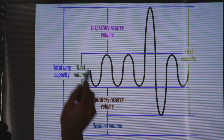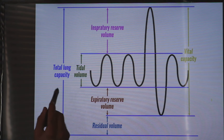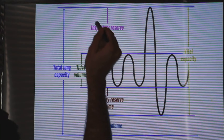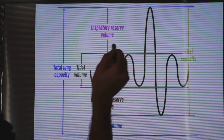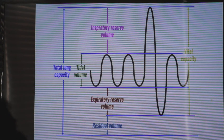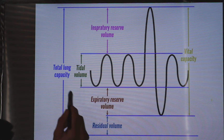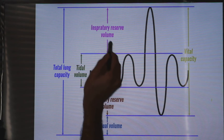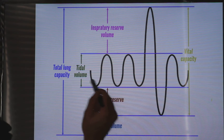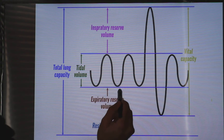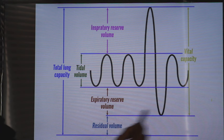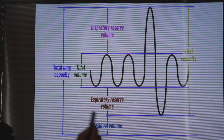So the normal volume is the tidal volume. If I ask you to take more volume to inflate your lung as much as possible, this is the inspiratory reserve volume, which is about 3000 cc. The tidal volume is 500 cc. If at the end of expiration I ask you to expire more as much as you can, this is the expiratory reserve volume.